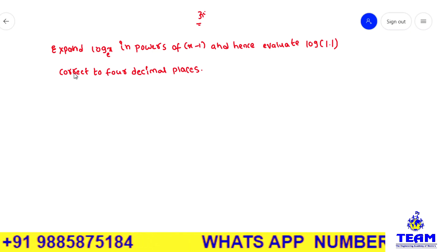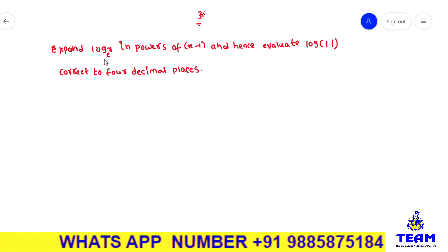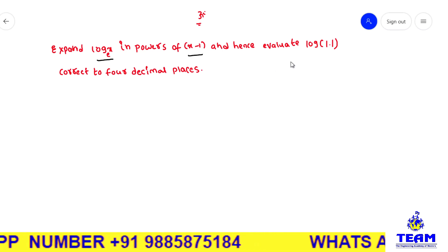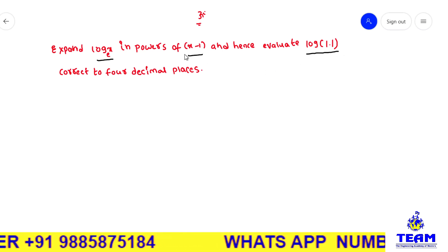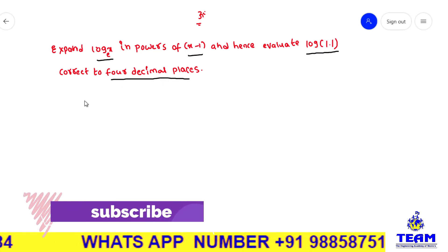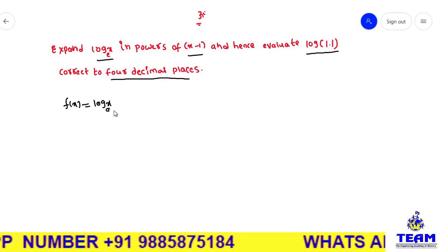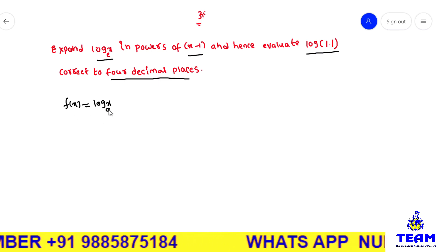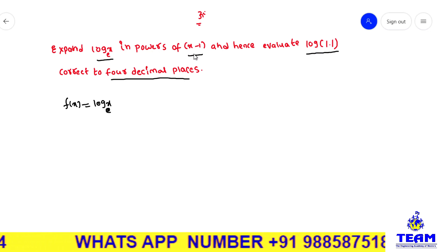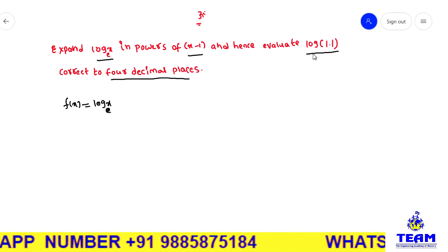Hi friends, in this video we are solving problems on Taylor series expansion. The given problem is to expand log(x) in powers of (x minus 1), and hence evaluate log(1.1) correct to 4 decimal places. First, I am writing the given function as f(x) = log(x). We have to expand this function about x = 1, or simply expand in powers of (x minus 1). After that, we have to evaluate log(1.1).